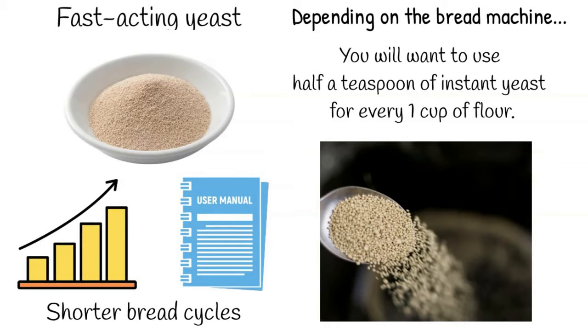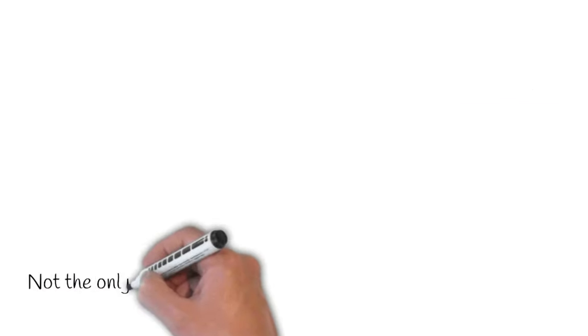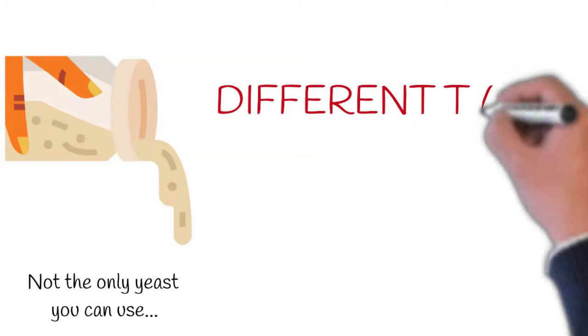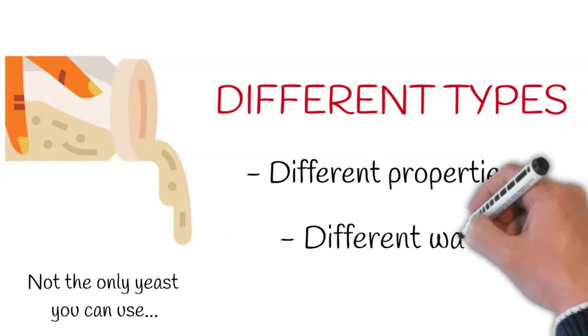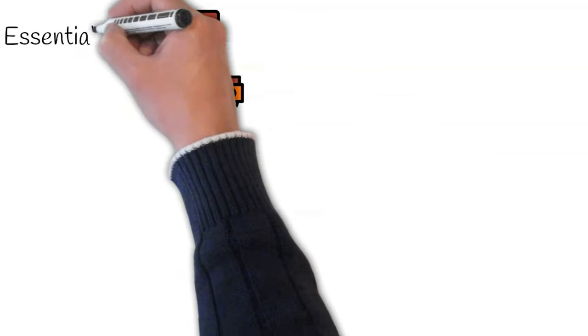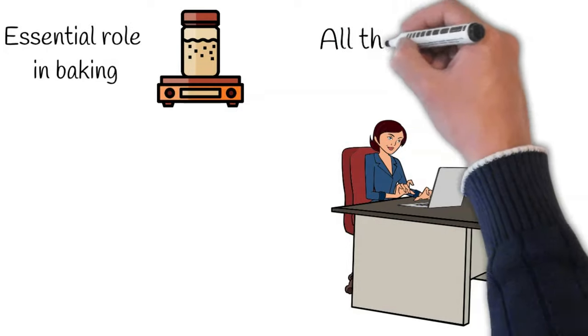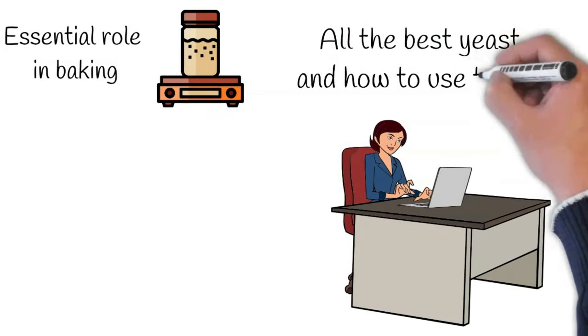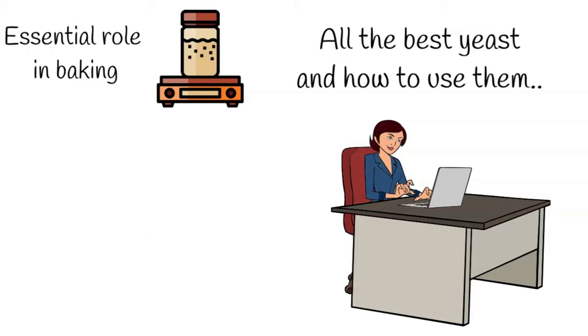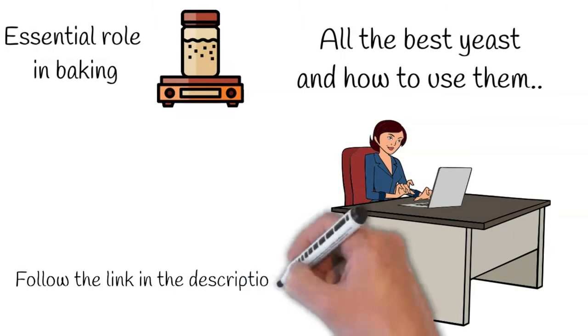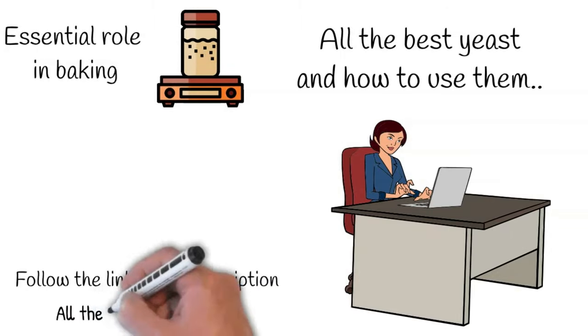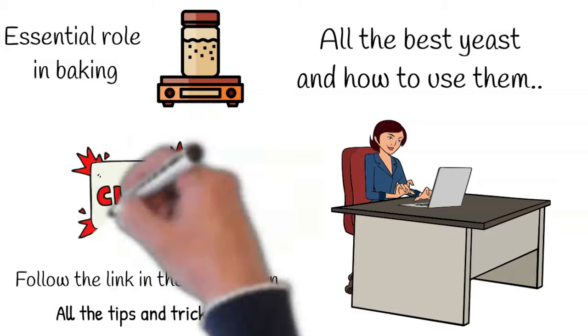Of course, fast-acting yeast is not the only yeast you can use in bread machines. Different types of yeast have different properties and require different ways of using them. Because yeast has such an essential role in baking, I have written a detailed article covering all the best yeast and how to use them correctly in bread machines. Just follow the link in the description below this video for all the tips and tricks for using yeast.